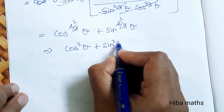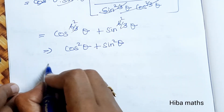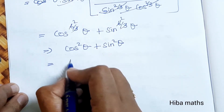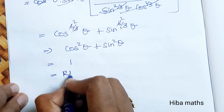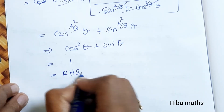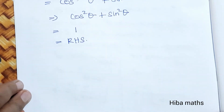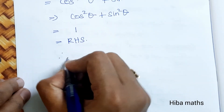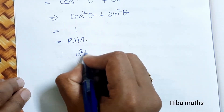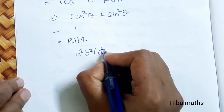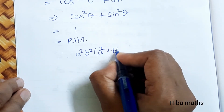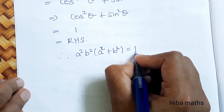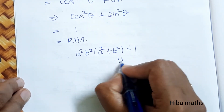Cos square theta plus sin square theta equals 1, which is the RHS. Therefore, a square into b square into a square plus b square is equal to 1. Hence proved.